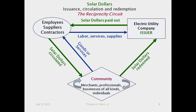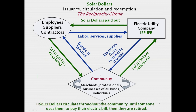These employees, suppliers, and contractors want to be able to use the solar dollars to get what they need and want, so they have the opportunity to spend them into the community. Local merchants, professionals, and business providers of all kinds will accept them in return for goods and services. The solar dollars will eventually be redeemed, but first they can circulate any number of times amongst people and businesses in the community, providing the medium of exchange function as a supplement to conventional pounds, dollars, euros, or whatever currency is official in that region. And of course, the electric utility company accepts those solar dollars in return for the electric services that it provides.